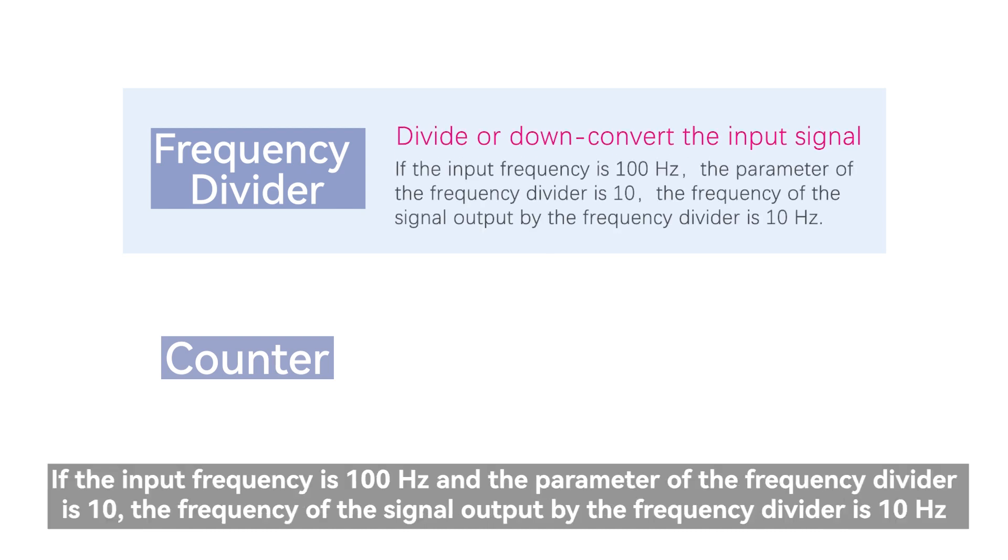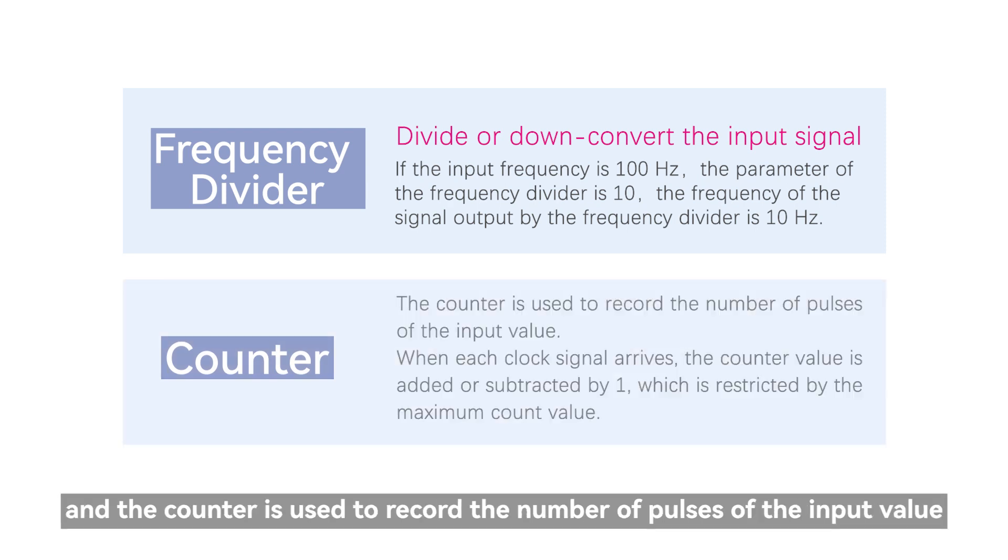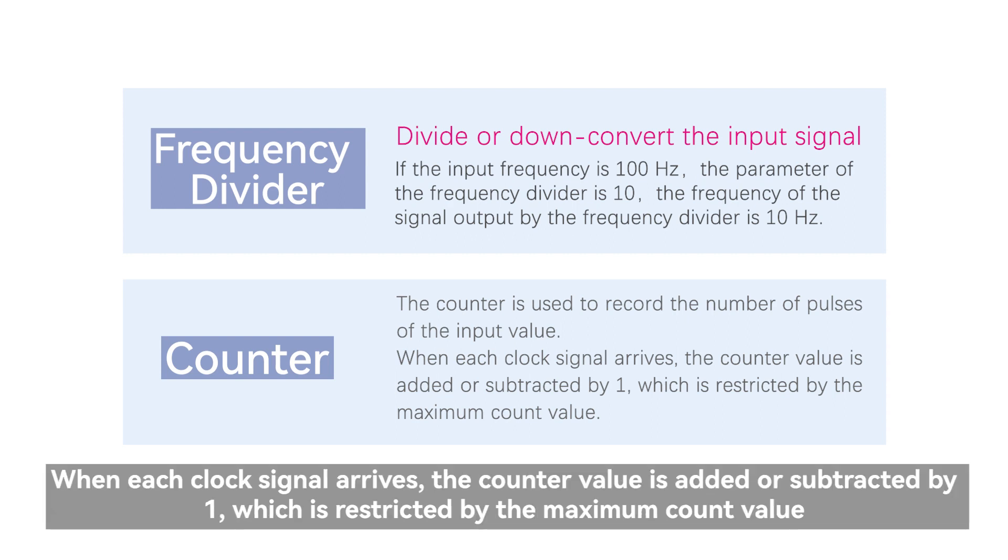If the input frequency is 100 Hz and the parameter of the frequency divider is 10, the frequency of the signal output by the frequency divider is 10 Hz. The counter is used to record the number of pulses of the input value. When each clock signal arrives, the counter value is added or subtracted by 1, which is restricted by the maximum count value.